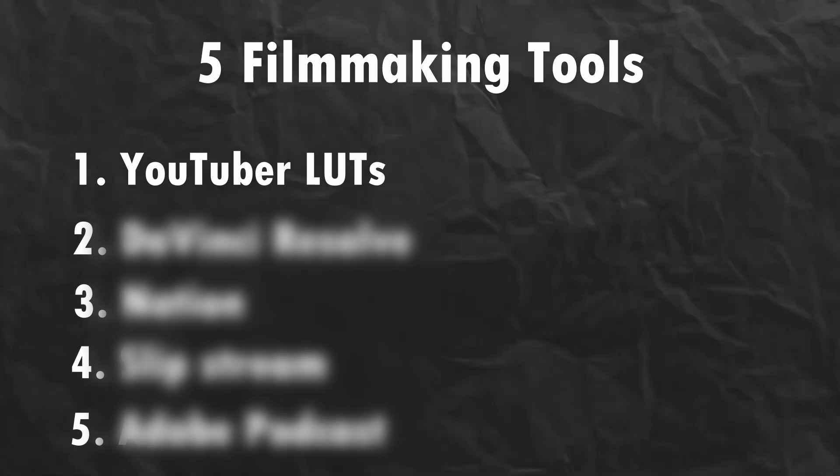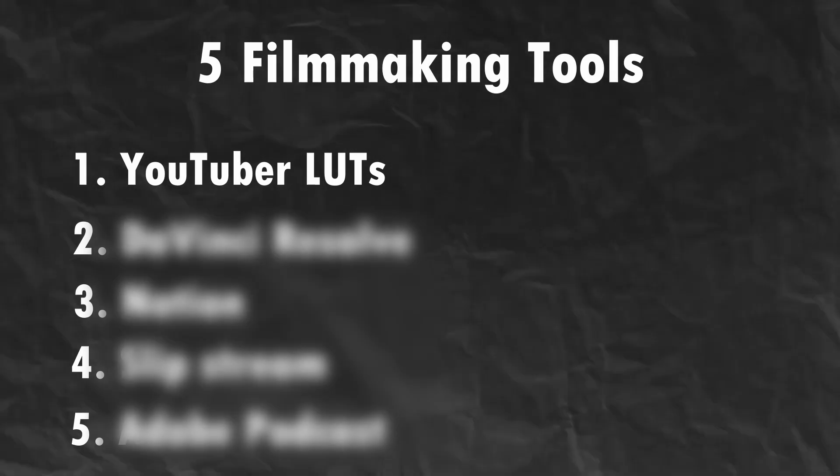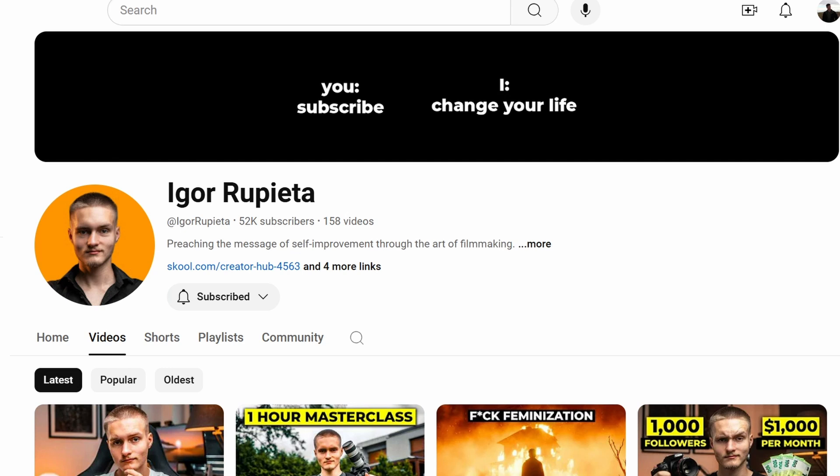So the first one is YouTubers' color grading LUTs. And usually this is the part in the video where someone would say, hey, download my free LUT pack, but that's not what I'm going to say because I don't have any. My point is that you can go onto filmmaking channels like Igor Pieda or Nicholas Crystal and they actually have creator kits sometimes you can download, and they have like a couple of free color grading LUTs. Those can be really useful a lot of the time.